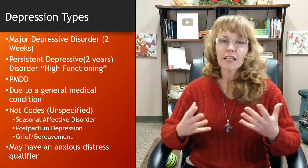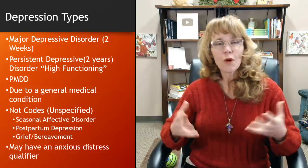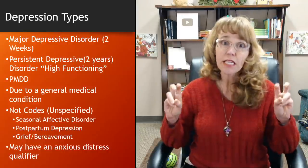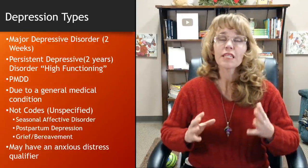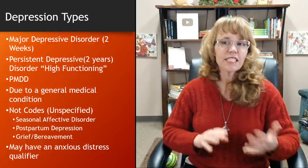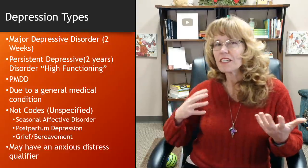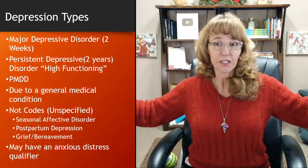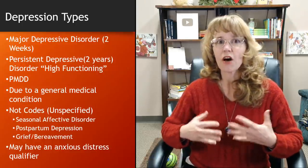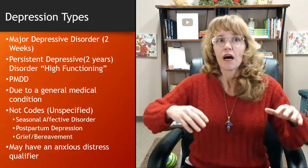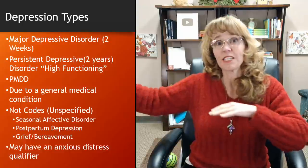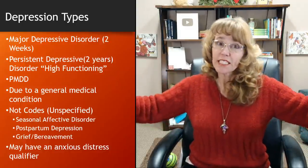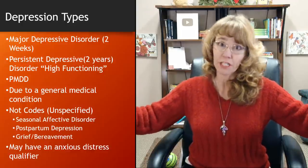There are a lot of different types of depression. The one we're most familiar with is major depressive disorder, and for this one, the person has to have clinically significant symptoms for at least two weeks. Persistent depressive disorder, on the other hand, is often called high-functioning depression. It goes on for about two years. Persistent depressive disorder can also be diagnosed in somebody who has sporadic episodes of major depressive disorder, but the key here is it's something that this person has been dealing with for a really long time.